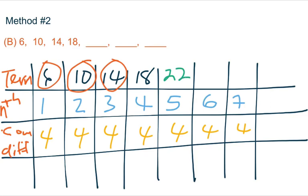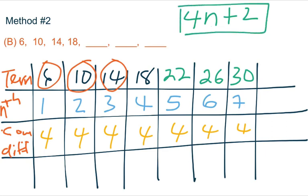Four times six, twenty-four plus two will give us twenty-six. Four times seven, twenty-eight plus two will give us thirty. So we could write a formula that says four times n plus two. And that's our formula we could use to find any term.